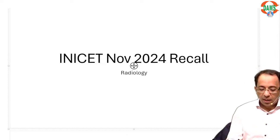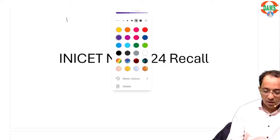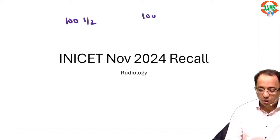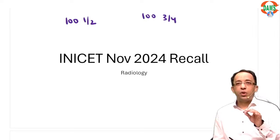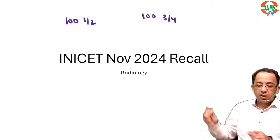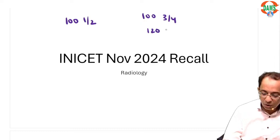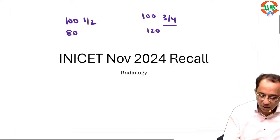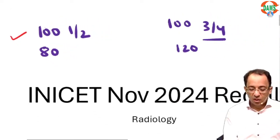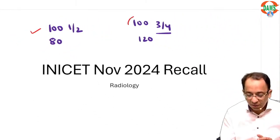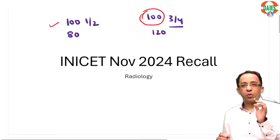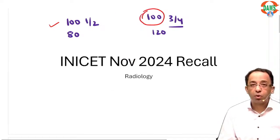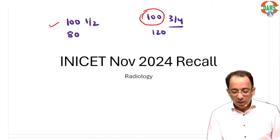INICT as an exam has 100 questions on first and second year, and 100 questions on third and fourth year. This is unique — it is different from NEET PG, where you have 120 questions on third and fourth year and 80 questions from first and second year. As a result, in INICT there is a predominance of first and second year questions, because of which third and fourth year subjects suffer, since you have to squeeze all those bigger subjects into 100 questions.